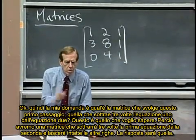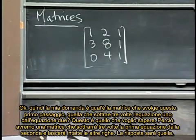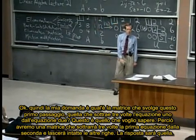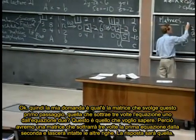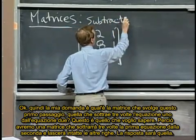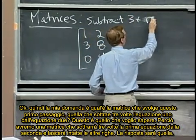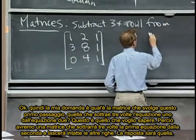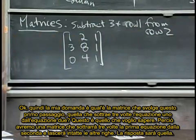Okay, now, so my question is, what's the matrix that does this first step, that takes, subtracts three of equation one from equation two? That's what I want to do. So this is going to be a matrix that's going to subtract three times, times row one from row two.